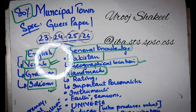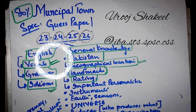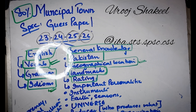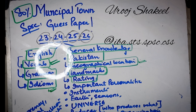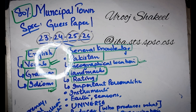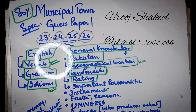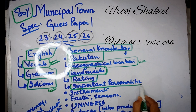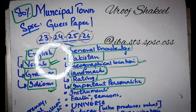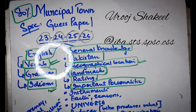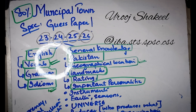You can also prepare for Pakistan's area, population, and ratings. Ratings cover things like Pakistan's literacy rate, financial or economic rate, producers, exporters, and importers. Important personalities of Pakistan are also important — personalities like Sir Syed Ahmed Khan, Allama Iqbal, and Quaid-e-Azam. You can easily expect two or three MCQs related to these personalities.